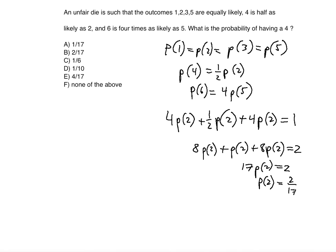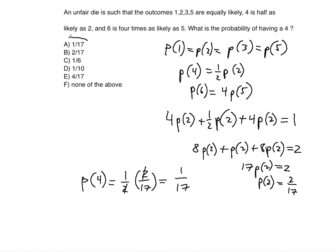We're not done yet because we need P(4). P(4) = (1/2) · P(2) = (1/2) · (2/17). The twos cancel, giving P(4) = 1/17. That's answer choice A. Hope you enjoyed this tutorial — please subscribe if you can and I'll see you in the next video.